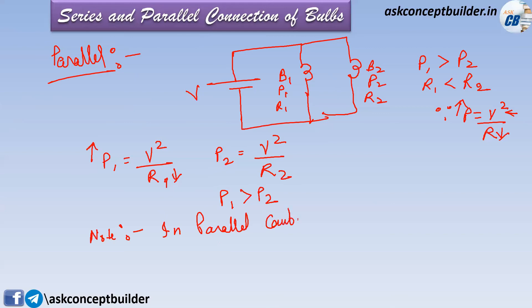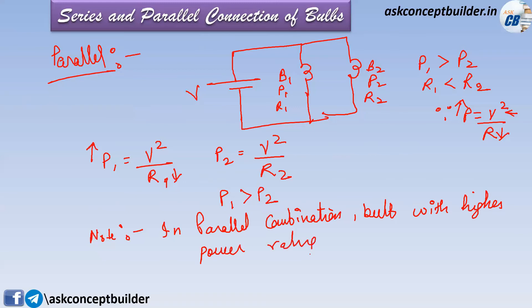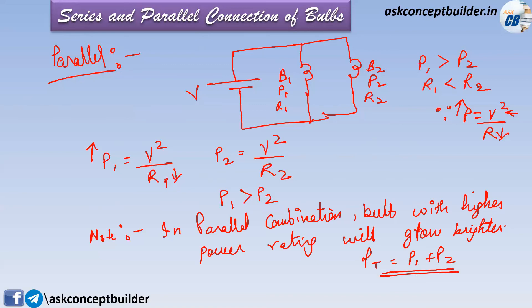In a parallel combination, the bulb with the higher power rating will glow brighter. The total power in a parallel combination is P1 plus P2 — that is, the sum of the individual powers. Let us now summarize this.